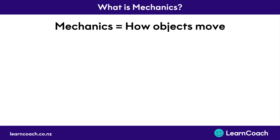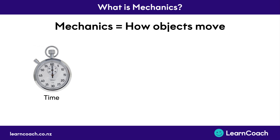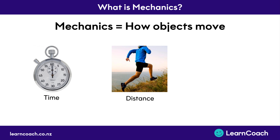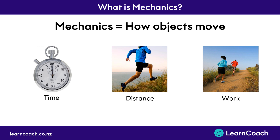Before we do any of that we need to know what we're studying. The topic of this external is mechanics, which can be described as how objects move. So anything in the world that's moving has mechanics acting in some way. For example, let's say that you're going for a run. You can measure the run in terms of how long you ran for, or the time it took. You could measure it in terms of how far you ran, or the distance. Or you could measure it in terms of how hard the run was, or how much work you needed to put in. All of these things are called physics concepts — they're just ways that we measure how objects move.